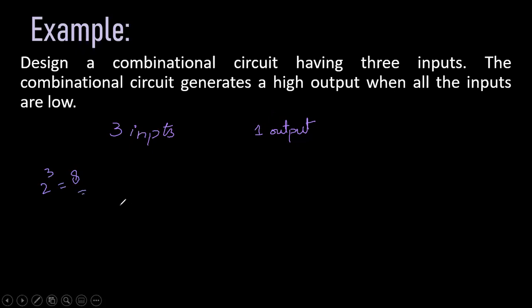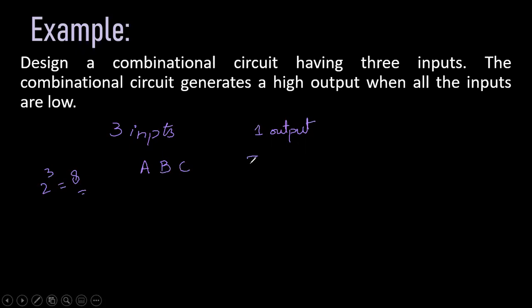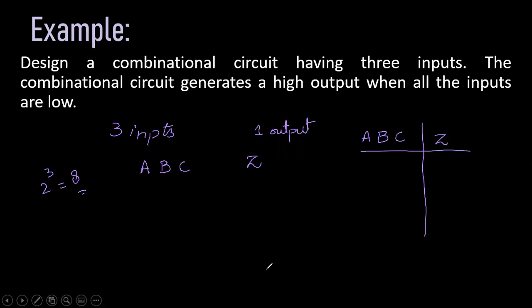In the first step we have determined the number of inputs and outputs. Now we will assign letters or symbols to each input and output. For example, we are having A, B, and C as inputs and Z as output. This is step number three. Now in the next step we are going to make the truth table for these inputs and output — A, B, and C are inputs and output is Z.